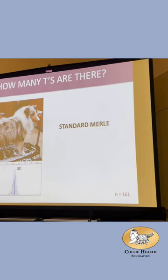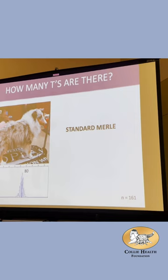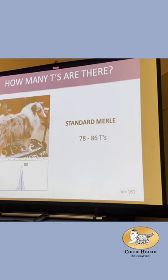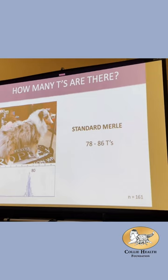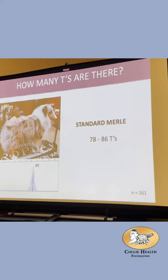We took merle dogs of all breeds, photographed their phenotypes, and designed an assay to count how many T's are in the tail. This peak tells me there are 80 T's. When we looked at 161 merle dogs, we found that all of them have 78 to 86 T's, and almost all have 79, 80, or 81. The standard collie has 79 T's — that seems to be the norm.